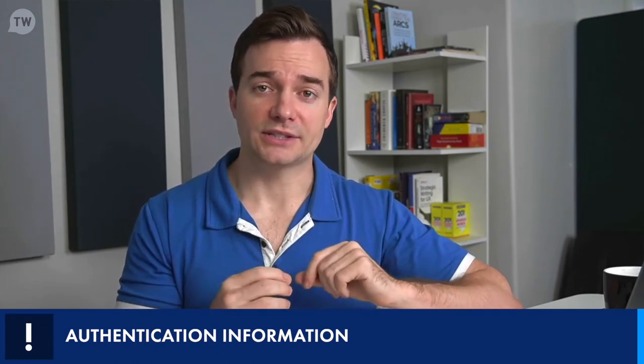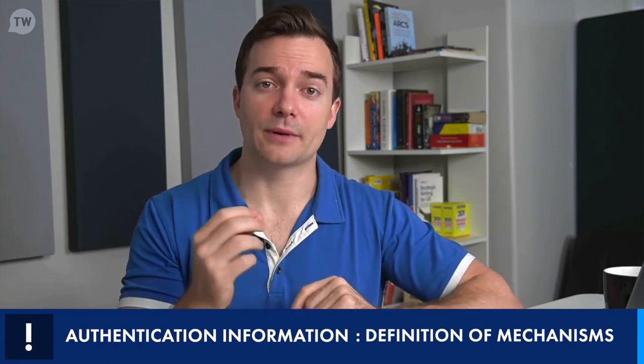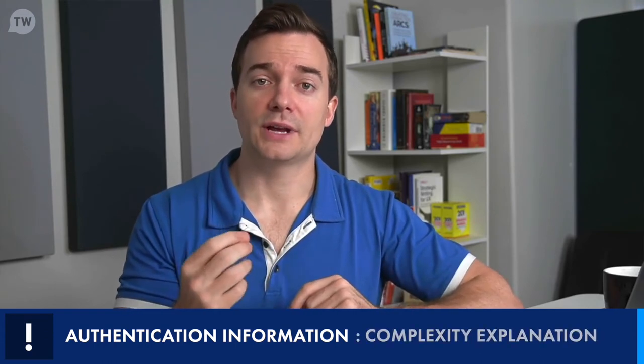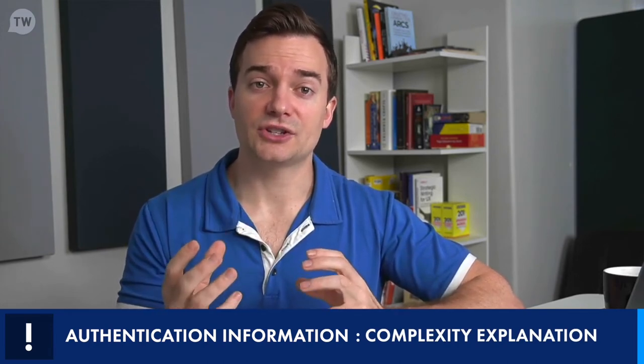The authentication information explains how the API identifies who is trying to access its functions. Depending on the app's complexity, the API could have several authentication mechanisms in place to ensure secure access. The writer will define each of the mechanisms and explain why the API prefers that system.